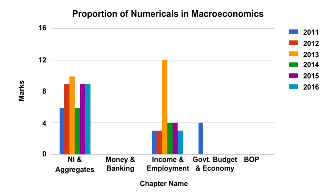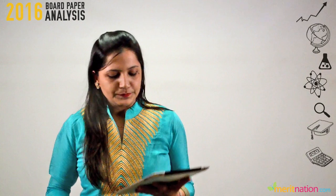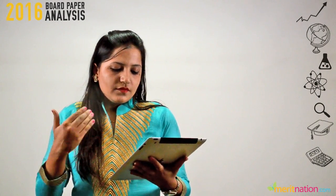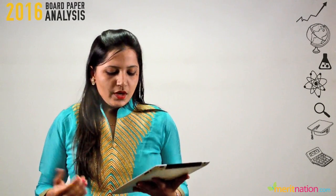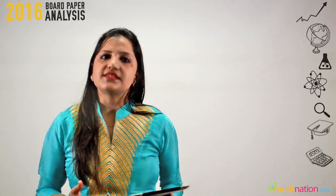In macroeconomics, the questions were asked from national income accounting and determination of income and employment, same as has been followed over the years. Overall, we have seen a slight decline in the numerical section — the numerical questions have reduced from 23 in 2015 to 19 in 2016.